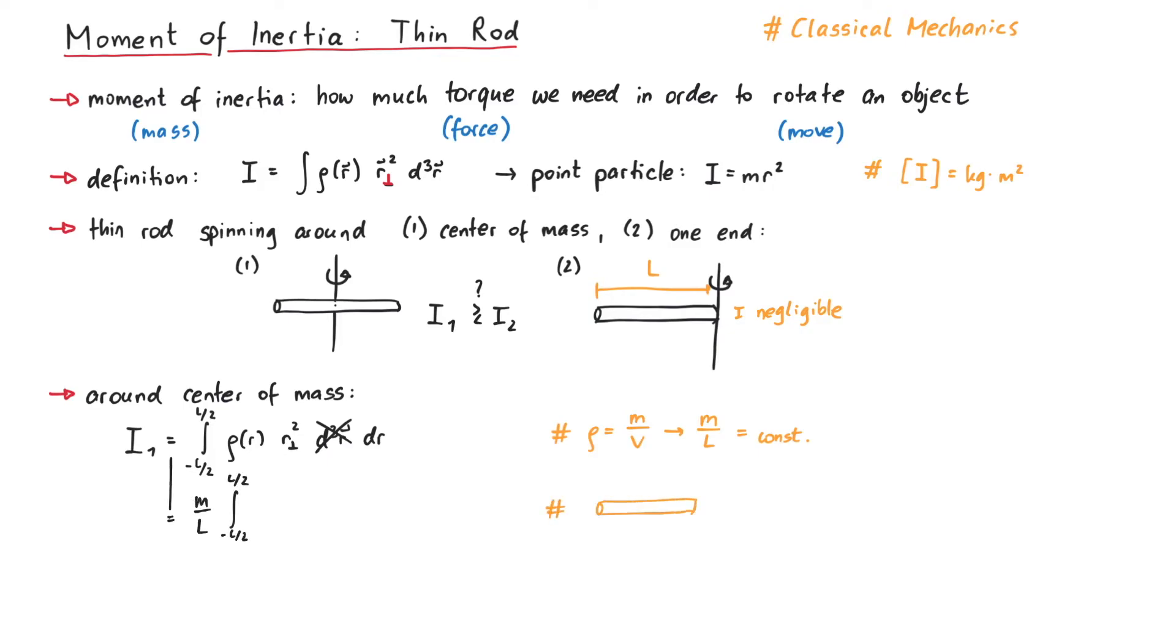The shortest perpendicular distance of some volume element to the axis of rotation is simply r, the distance to the origin, because we chose our coordinate system to be in the center of the rod. So the integration results in mL squared over 12.